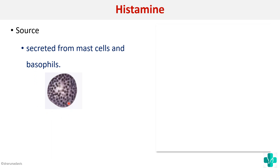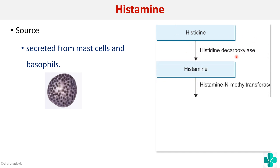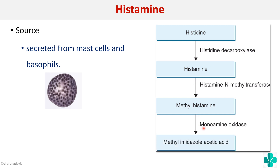Regarding the formation of histamine: histamine is produced from histidine by an enzyme called histidine decarboxylase. It is metabolized by another enzyme called monoamine oxidase, which converts histamine to methyl imidazole acetic acid (MIA). This is how the formation and metabolism of histamine takes place.